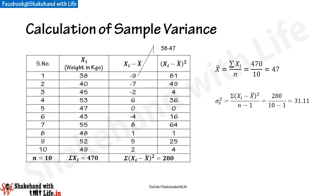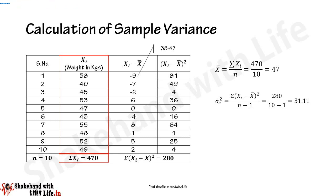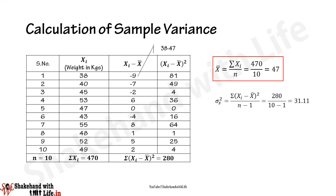Rearrange the data in column format. The first column has the sequence of students, and the second column has the weights denoted by Xᵢ. The sum of the weights, ΣXᵢ, comes out as 470. The average weight X̄ is calculated as ΣXᵢ divided by the number of students, which is 10, giving an average weight of 47 kg.